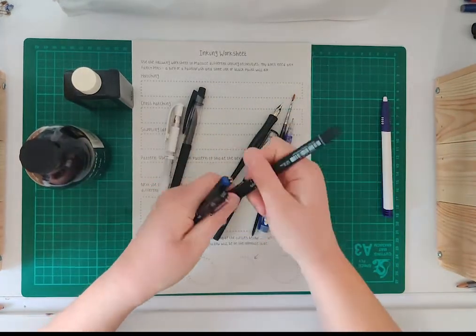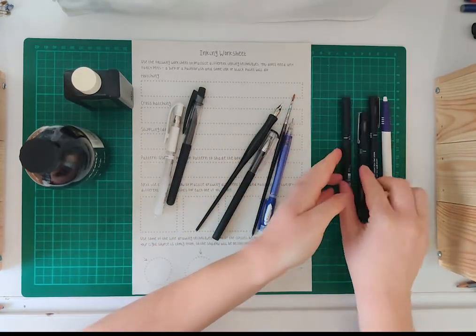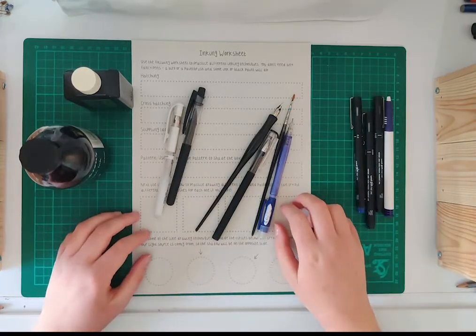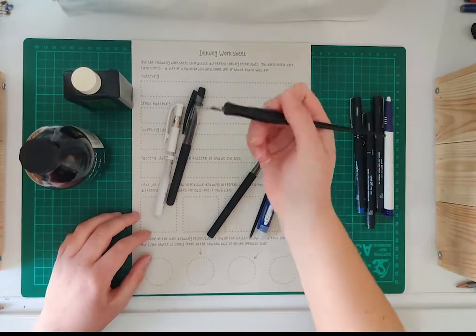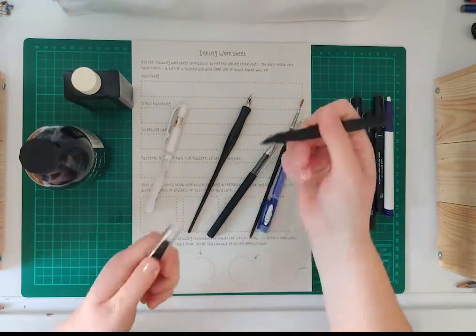Here, I've got some fine liners, calligraphy pens, a fountain pen and a paintbrush. You can get fine liners in lots of different sizes and they're often waterproof if you want to paint over the top, but the width of the line mostly stays the same when you draw.